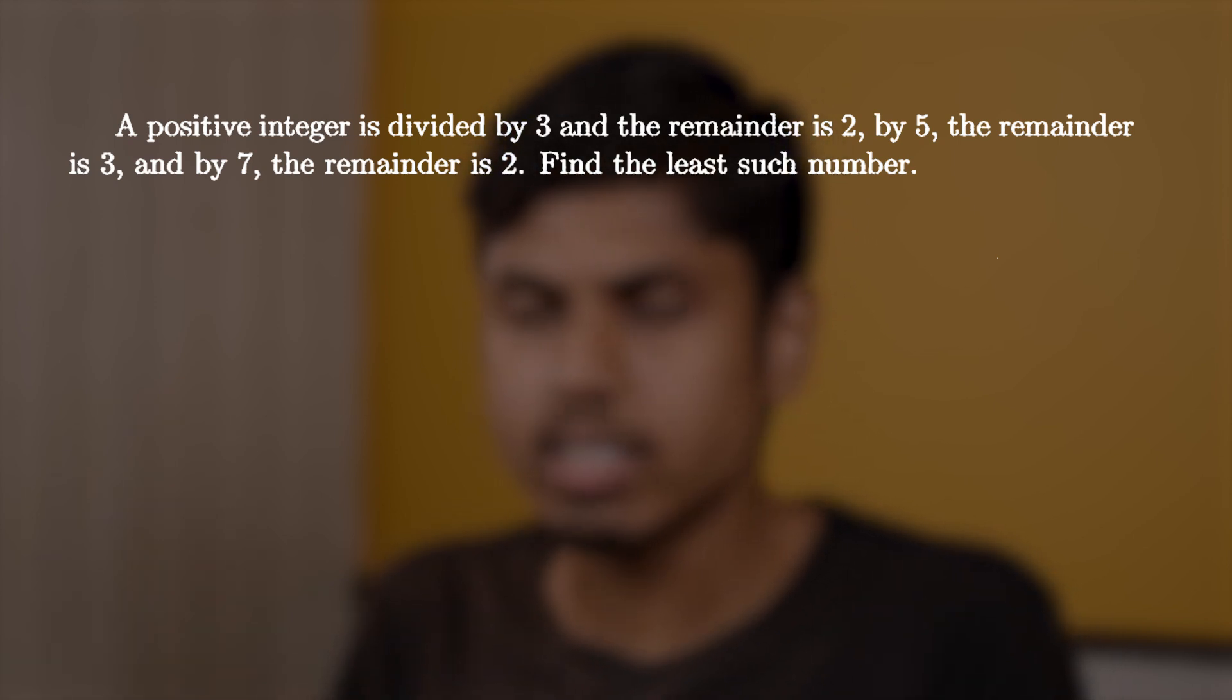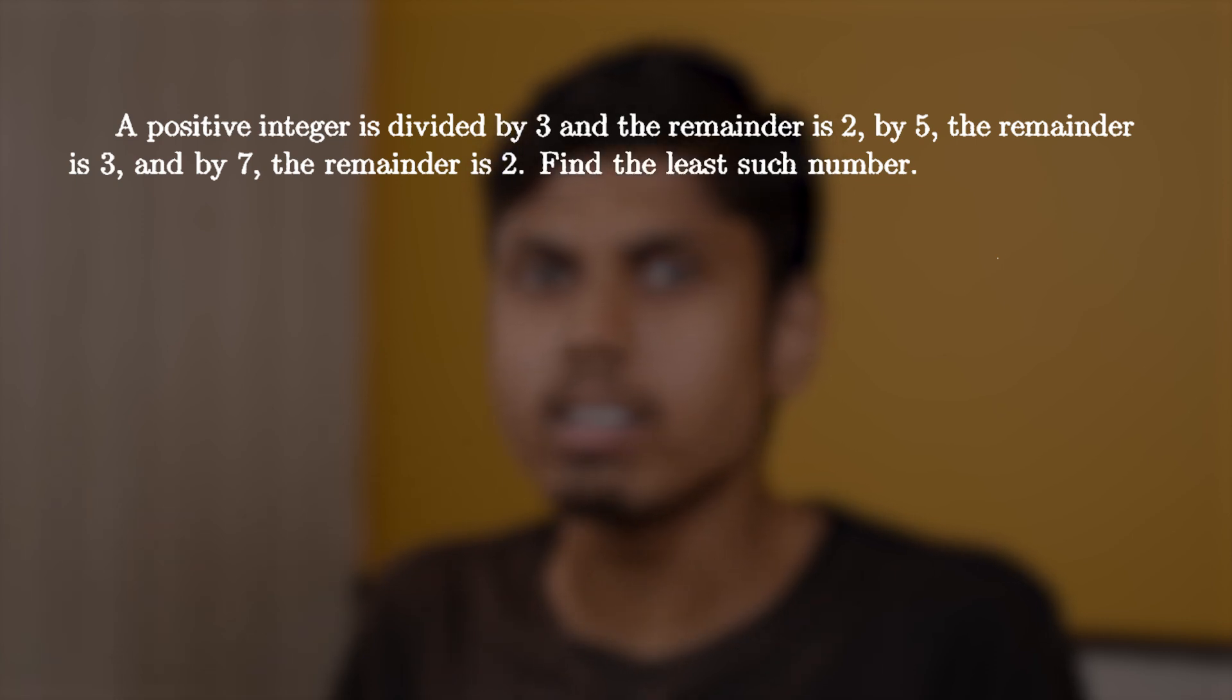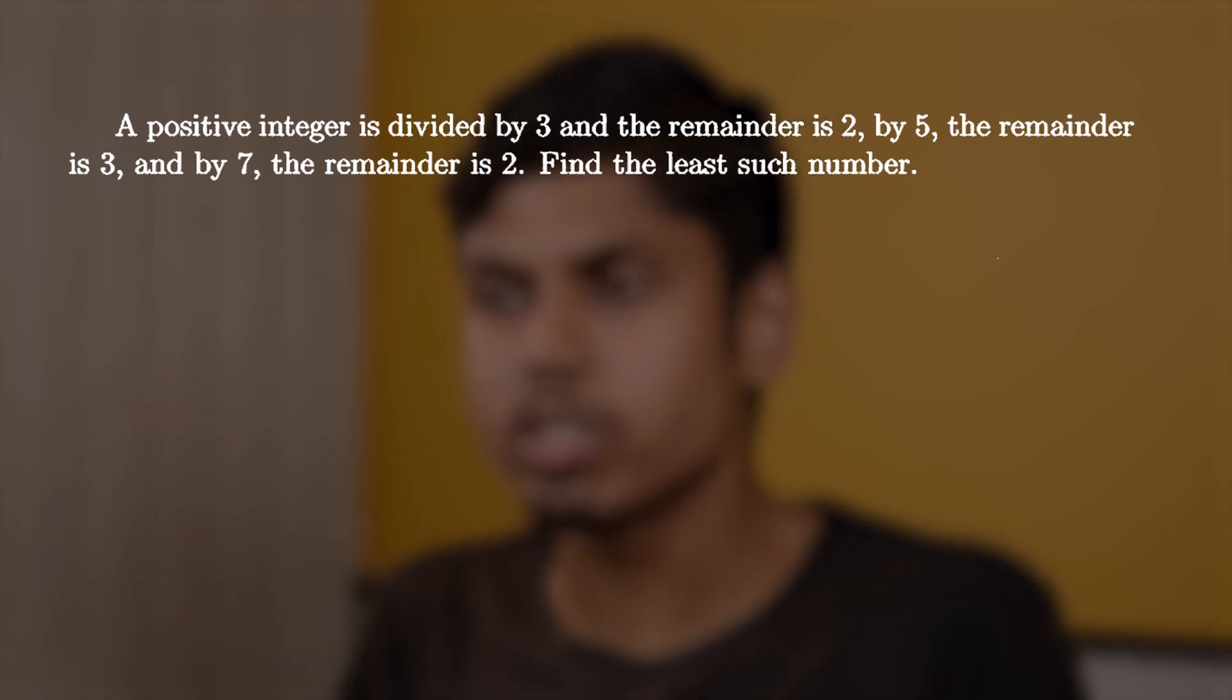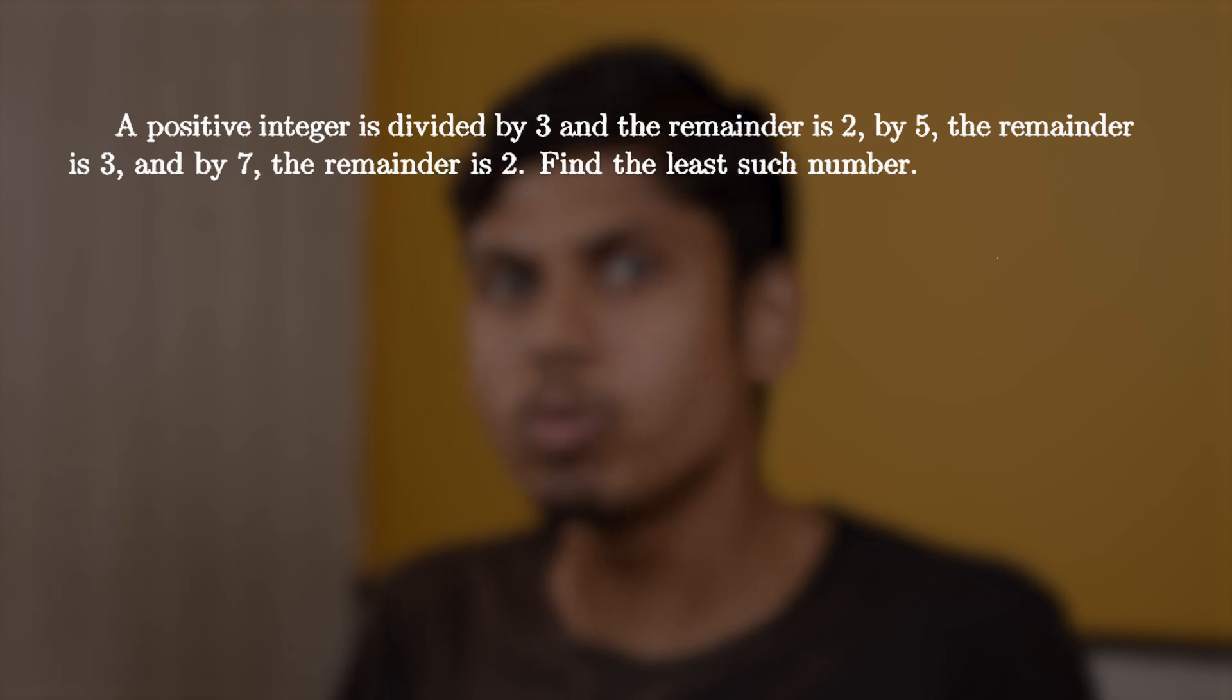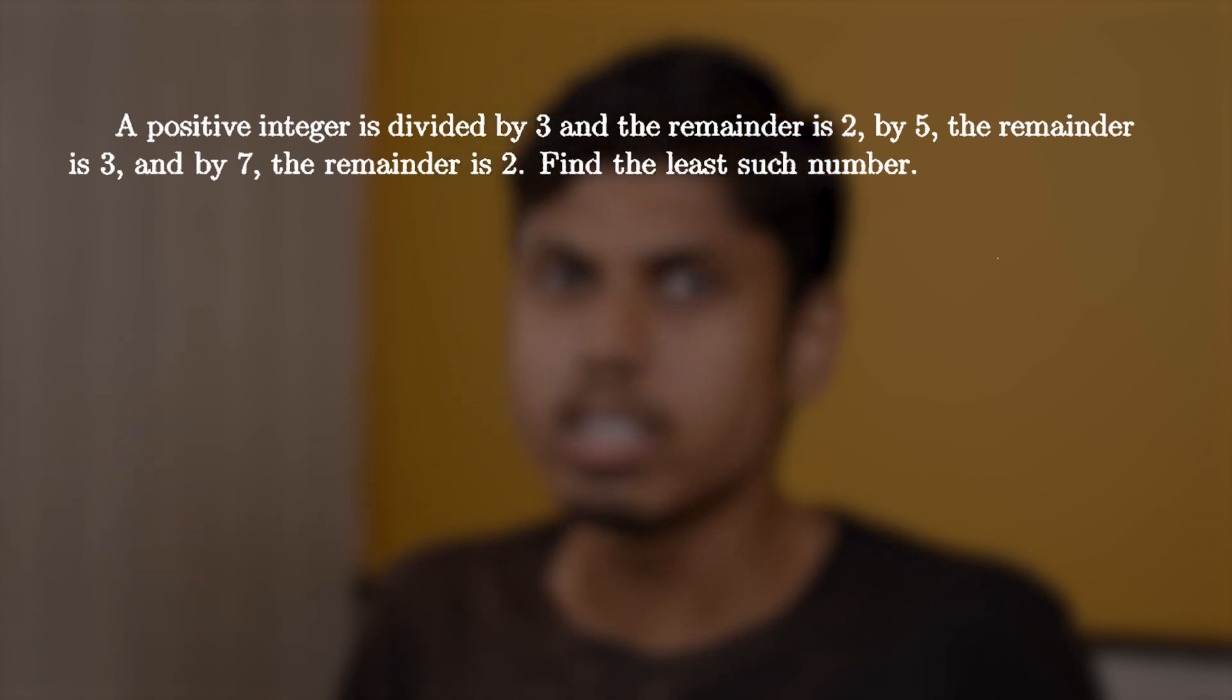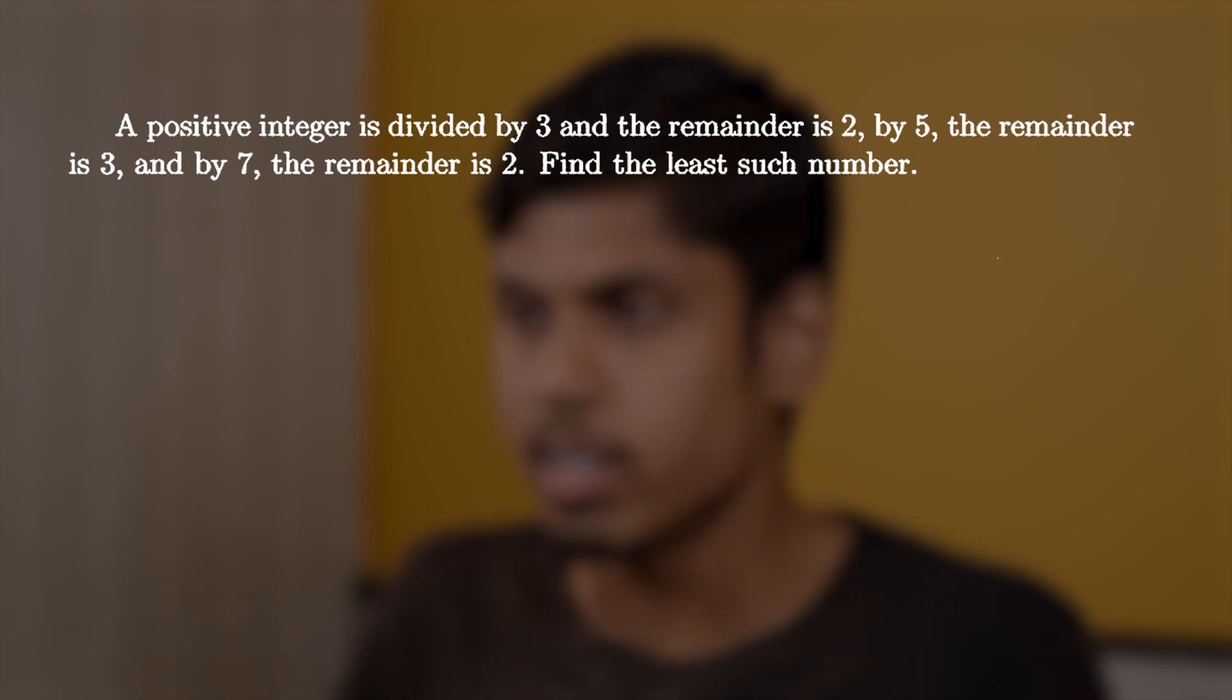We are supposed to find the least such number and let's proceed using two methods. First, using normal and simple algebra. Second, we will be doing it using congruences. This is just to consolidate your understanding about remainders and expressing the theorem in some other way.